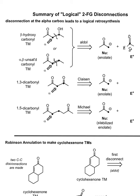So how about this next pattern? We have a 1,3-dicarbonyl — two carbonyls with a 1,3 relationship to each other. Well, that's the pattern of functional groups that results when we do a Claisen reaction.